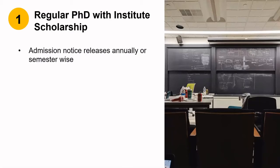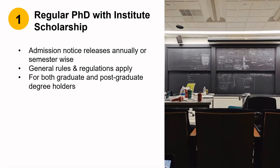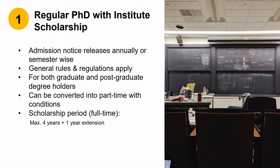Admission notices for these usually release yearly or semester-wise, that is twice in a year. All general rules apply according to the institute's PhD ordinance. Candidates with or without a postgraduate degree can apply. Full-time status can be converted into part-time according to institute rules and regulations. Generally, scholarship is provided for four years plus one year of extension. For information on how and what things to remember before applying, do check out my previous video, the link for which is provided below.